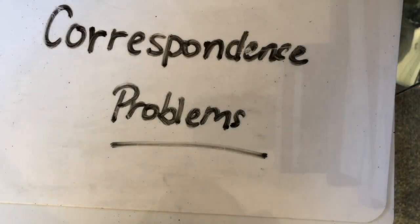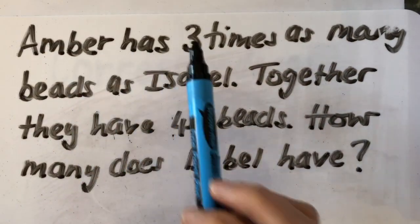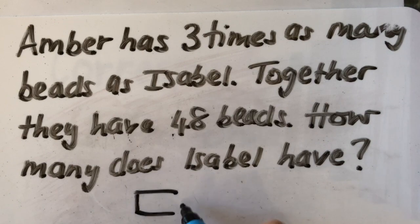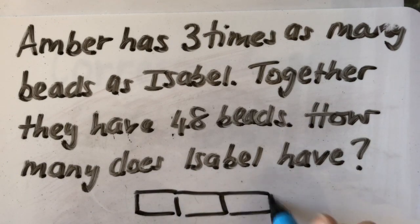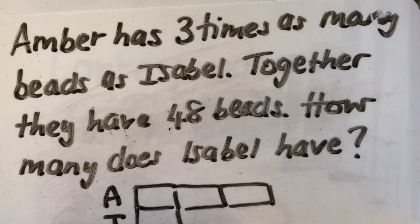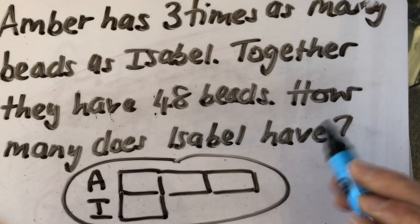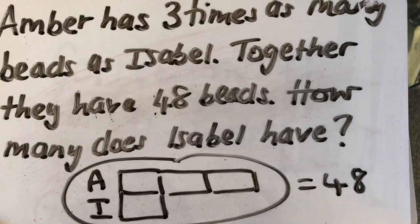And then finally, that question that we can look at is about working out the total of the answer. So Amber has 3 times as many. So 1, 2, 3. Amber. Beads as Isabel. That's my total parts. Together, so all together in all of this, equals 48. How many does Isabel have?